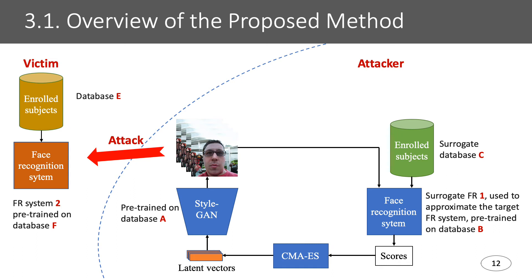Next I will introduce our proposed method. This is the overview: we use latent variable evolution to generate the master faces. First, random latent vectors are used by StyleGAN to generate several master faces, then they are scored by the face recognition system to compute the similarity with the enrolled subjects. The score is then used by the CMA-ES algorithm to draw new latent vectors, and this process repeats several times until we have master faces which can match with multiple identities. The master faces are then used by the attacker to attack different face recognition systems with different enrolled subjects.